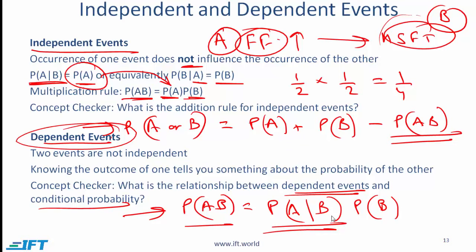So essentially, you need to remember this formula, remember the formula for the addition rule, and remember the fact that if events are independent then the multiplication rule is impacted, but the addition rule is not.